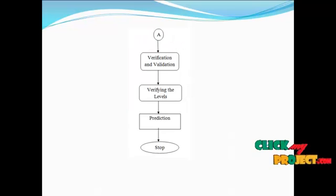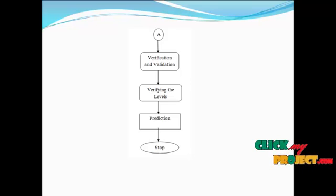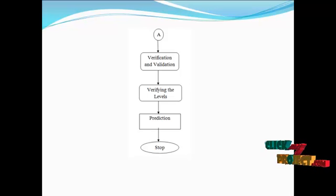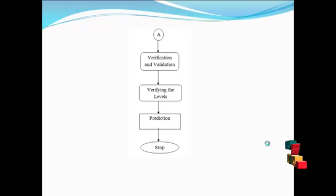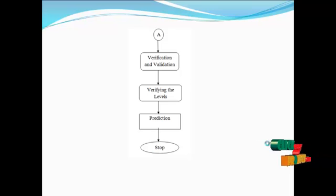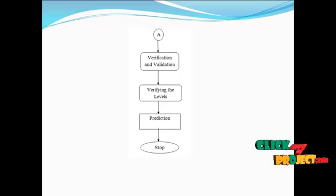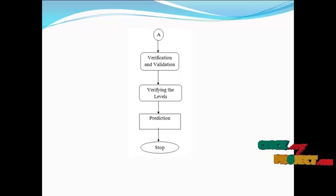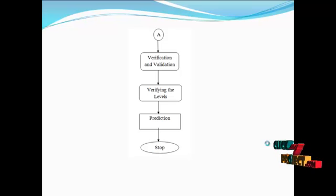After we predict the value, we use verification and validation. The verification and validation is performed by the Yule-Walker equation. By the process we use the AR model and Fuzzy AR model, and it will be verifying the levels by use of the Fuzzy AR model. The fuzzification and the AR model will be calculated, and from that we can predict the value. Finally we get the prediction.